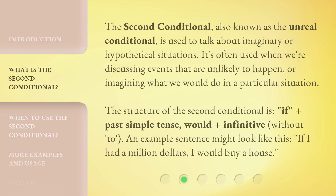The structure of the second conditional is: 'if' plus past simple tense, then 'would' plus infinitive without 'to'. An example sentence might look like this: 'If I had a million dollars, I would buy a house.'